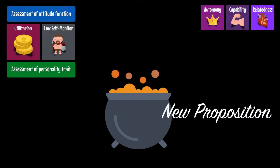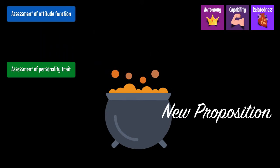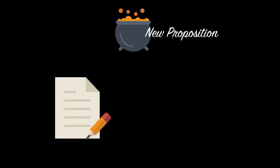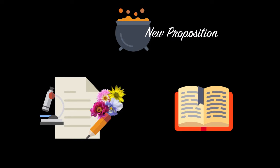Thus, in order to increase the chances of persuasion, Lola's new proposition should take into account the function of Terry's attitude and his personality, and should satisfy as much as possible his needs of autonomy, capability, and relatedness. With this proposition, Lola can craft a new message. Now, will an overtly persuasive message suffice, or should she deliver the message in the form of a narrative? And if an overtly persuasive message is enough, should she use a more analytical or a more affective approach to increase persuasion?